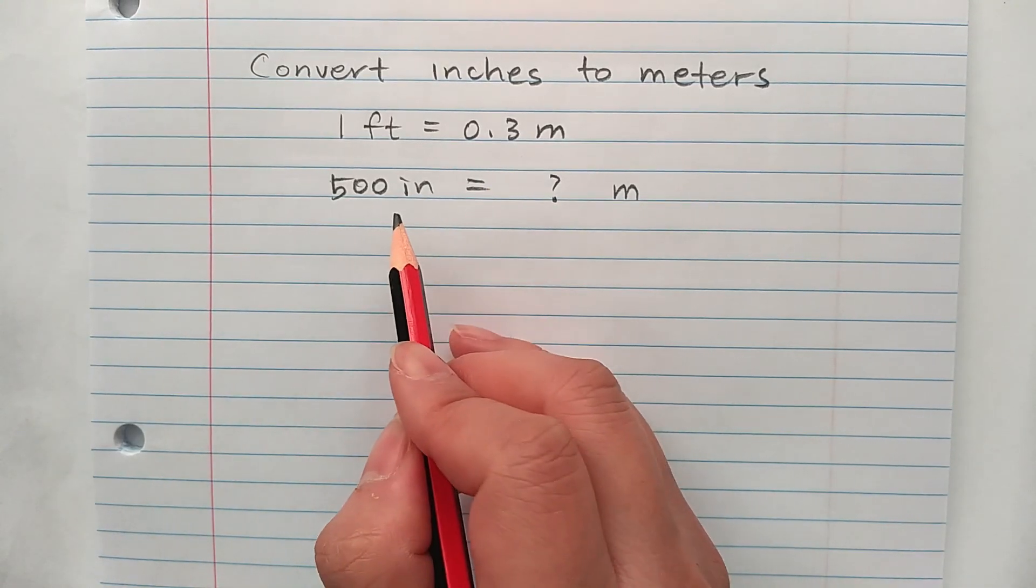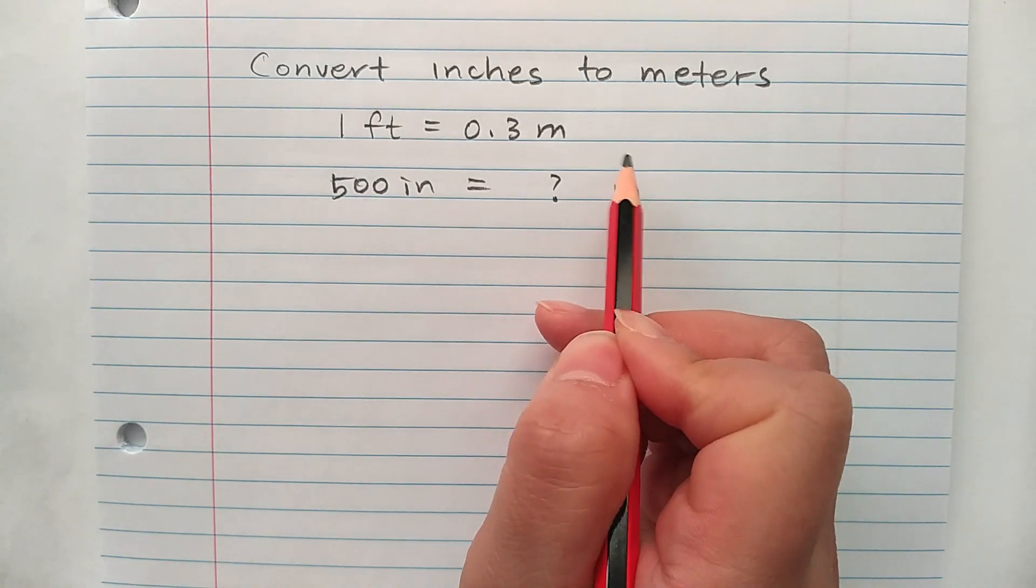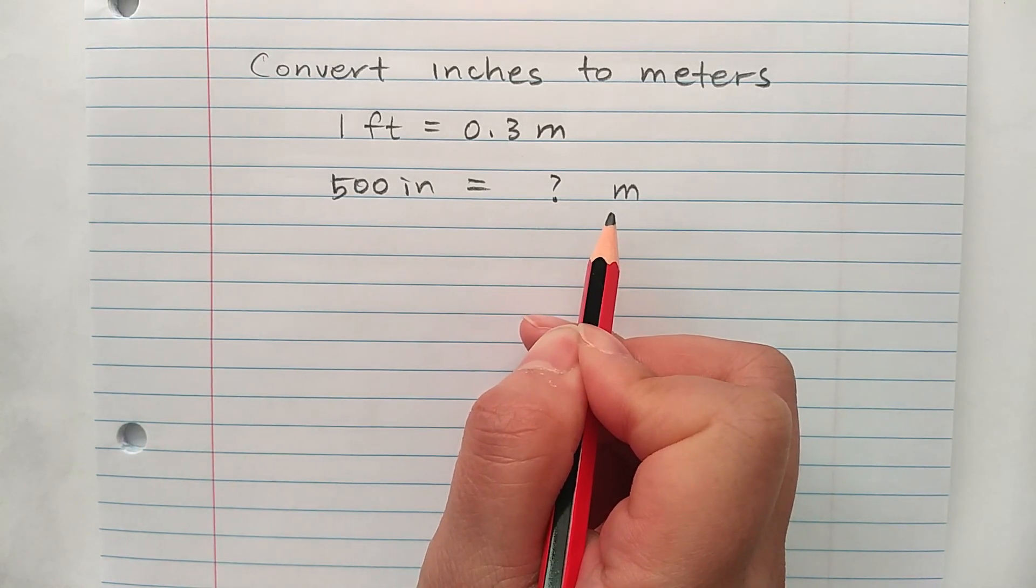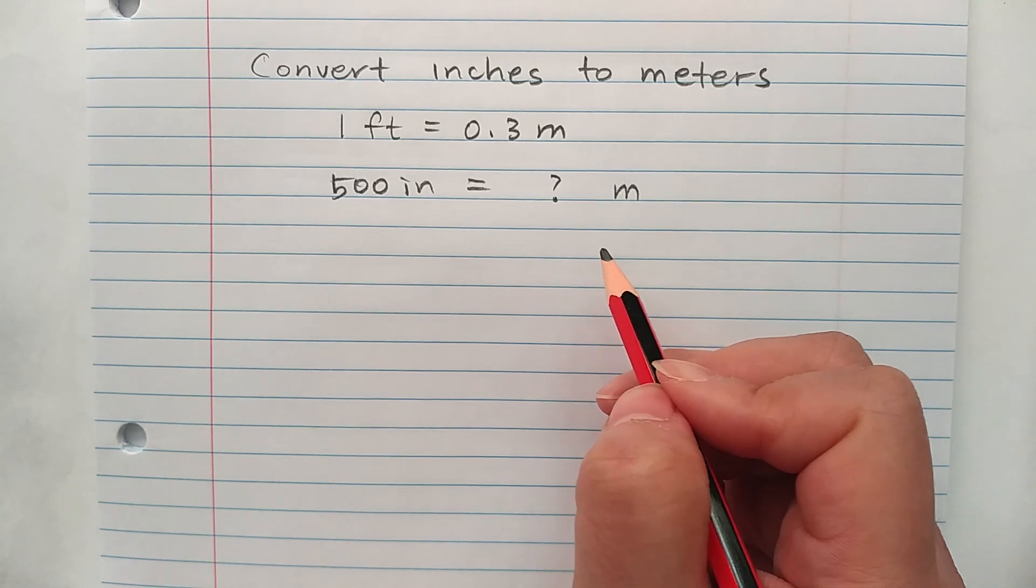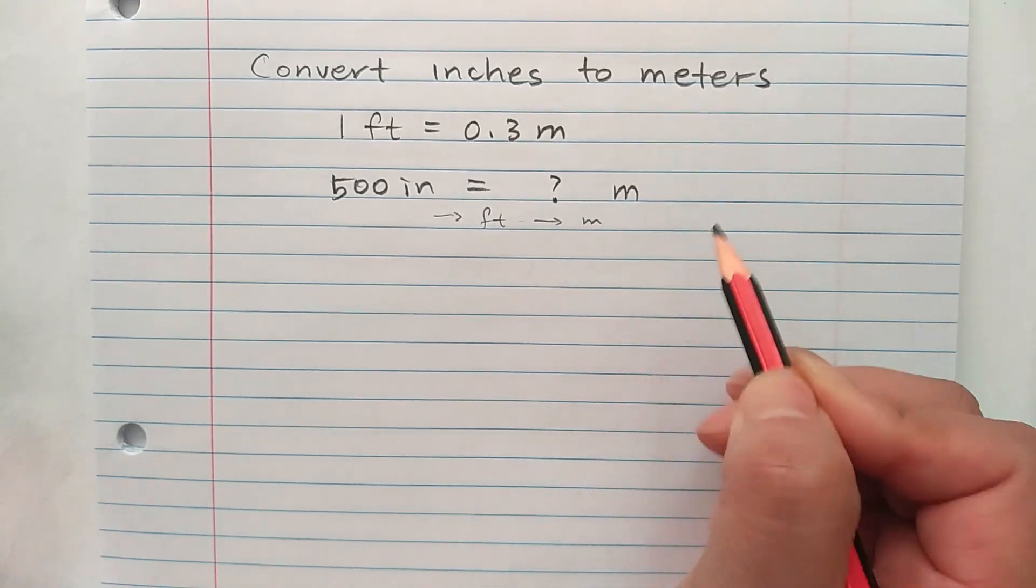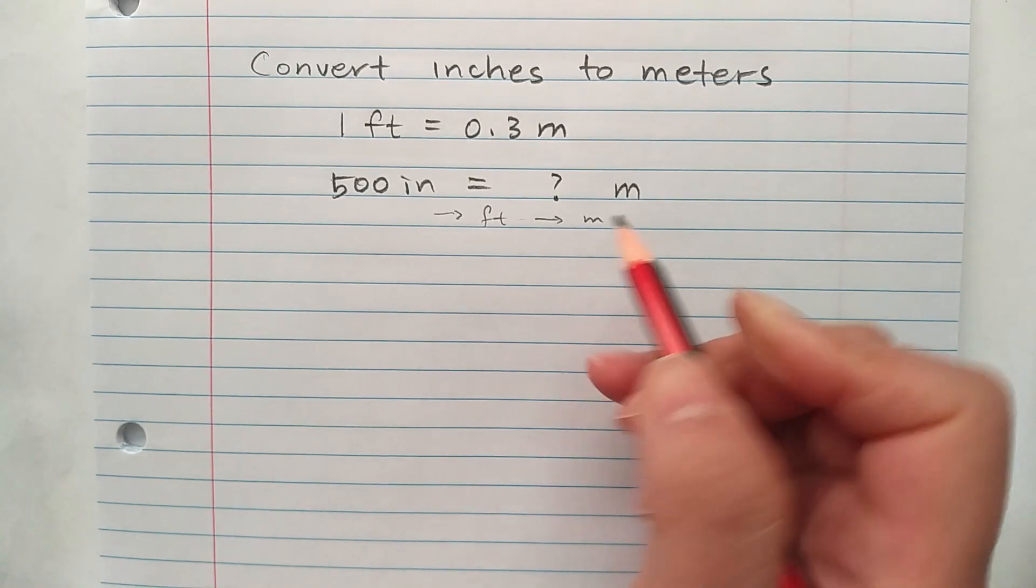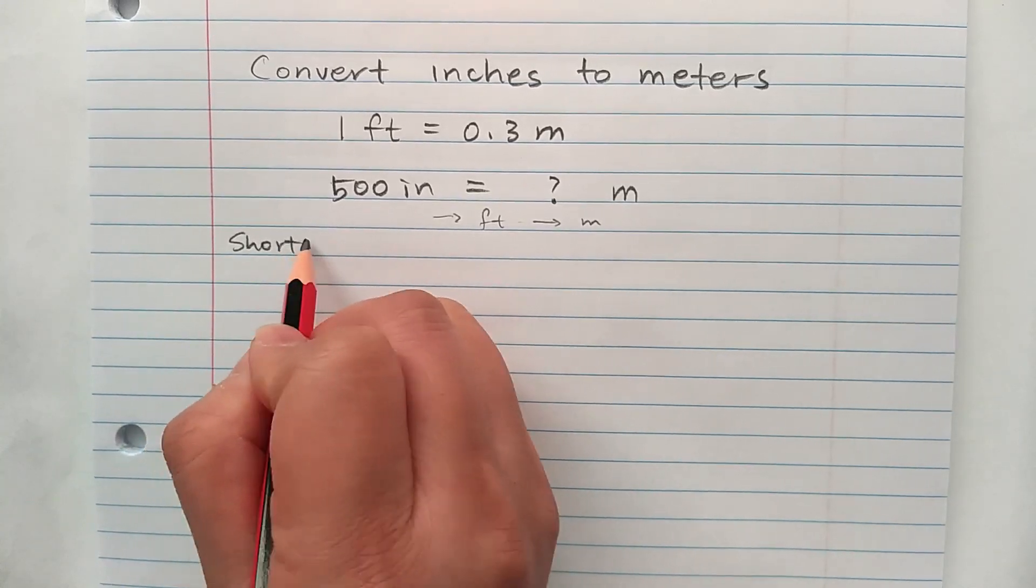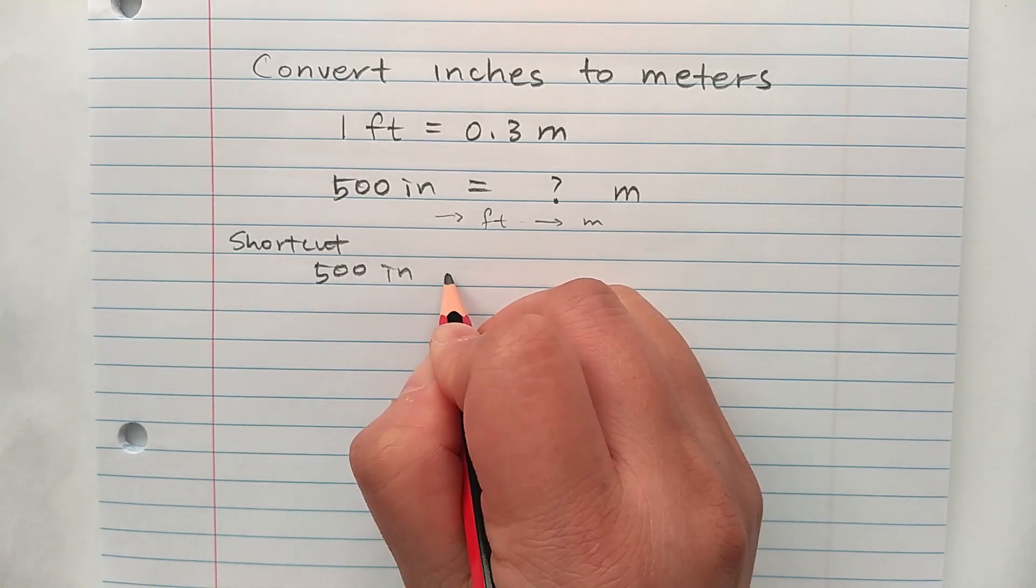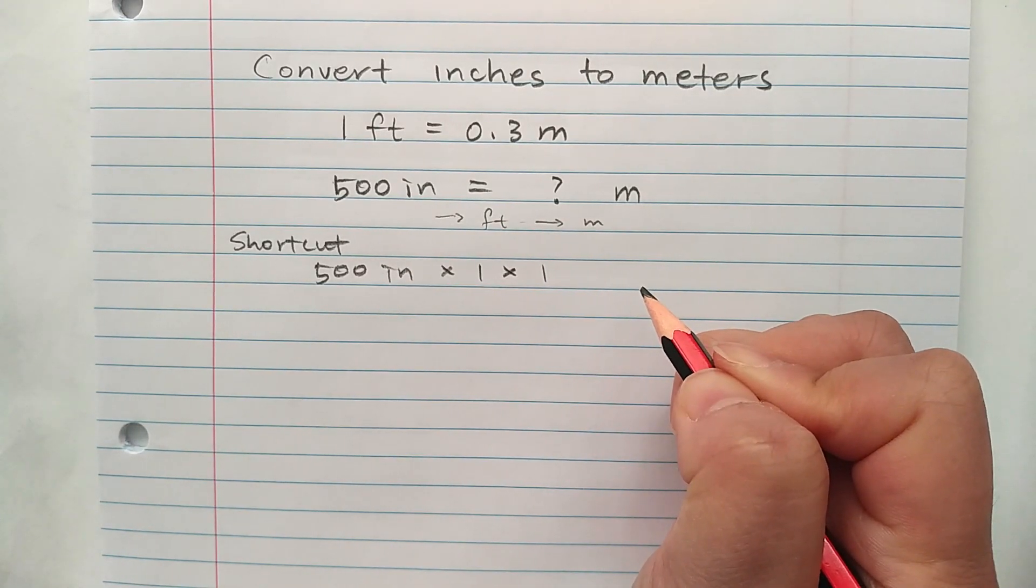Let's convert inches to meters. We are only given 1 foot is equal to 0.3 meters. Then 500 inches are how many meters. If we were to use ratio format, then we will have to change that to feet, and change feet to meters. This will take a couple more steps and take more time. So here's a shortcut. I'm going to do 500 inches times 1 times 1. Is that still 500 inches? Yes.